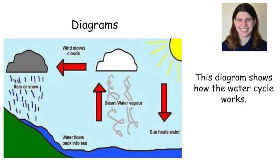Now, let's take a look at diagrams. A diagram is a drawing that shows how the parts of something work together. In this diagram of the water cycle, we see that the sun heats the water in the sea, causing it to turn into vapor and rise up into the clouds. When the wind moves the clouds, it may rain or snow, sending the water back to the sea. The diagram makes it much easier to visualize how all of this works.